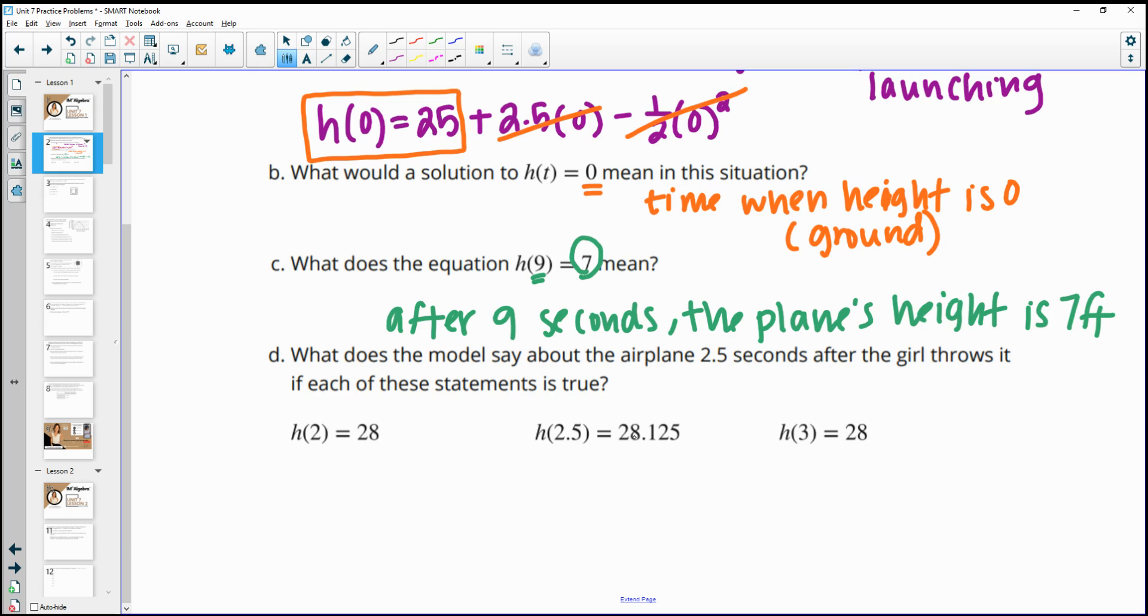Two and a half seconds, it's at 28.125. And then three seconds, it's back to 28. And so we see this symmetrical height here. And we see that it's happening after an equivalent amount of time. So 0.5 seconds for each.